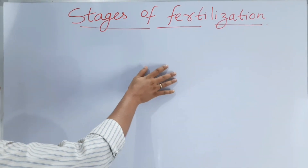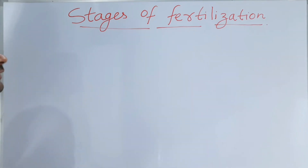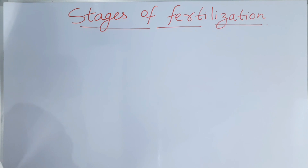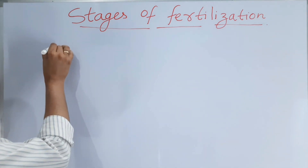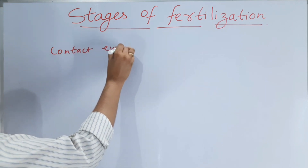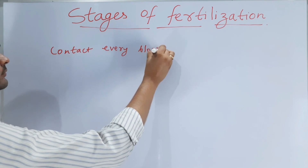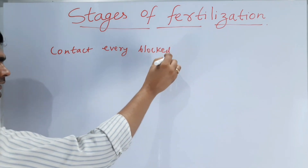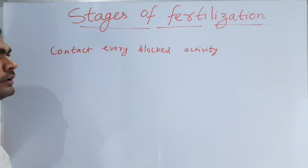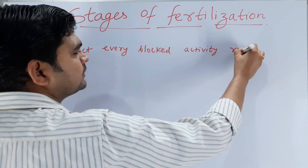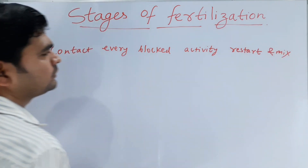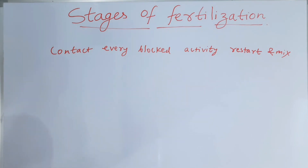Friends, if you feel difficulty in learning another trick I have told you earlier, I have got a new trick for you all. The trick is: contact every blocked activity, restart and mix. So this is the simple trick I made for you all for the stages of fertilization.